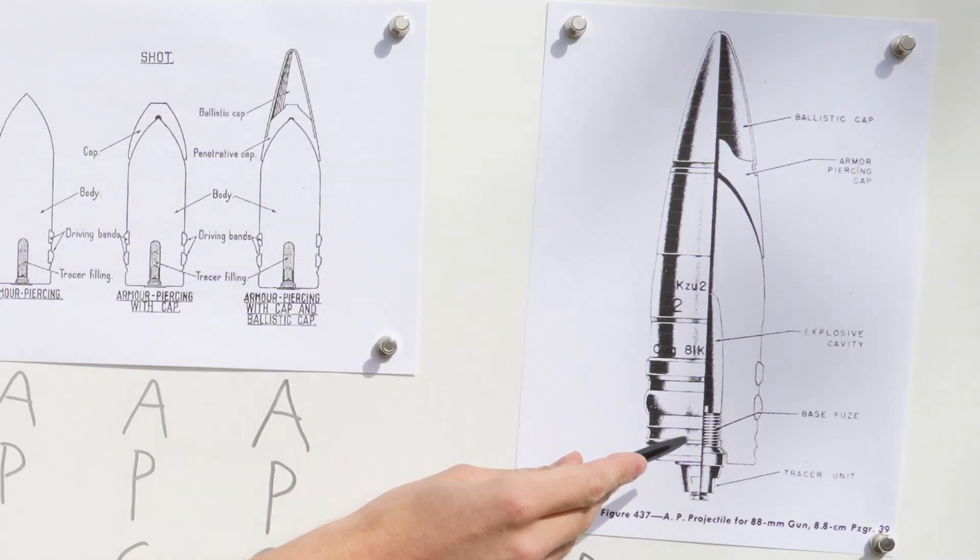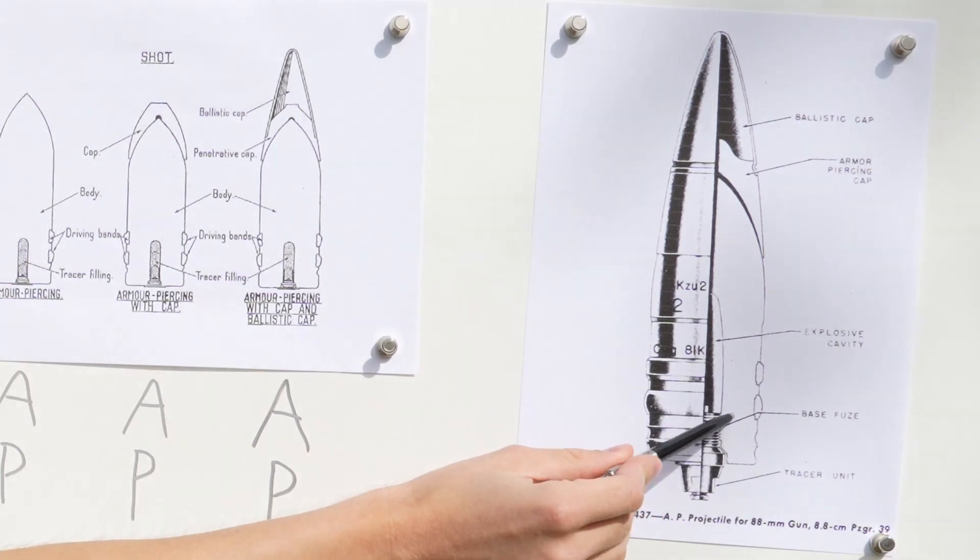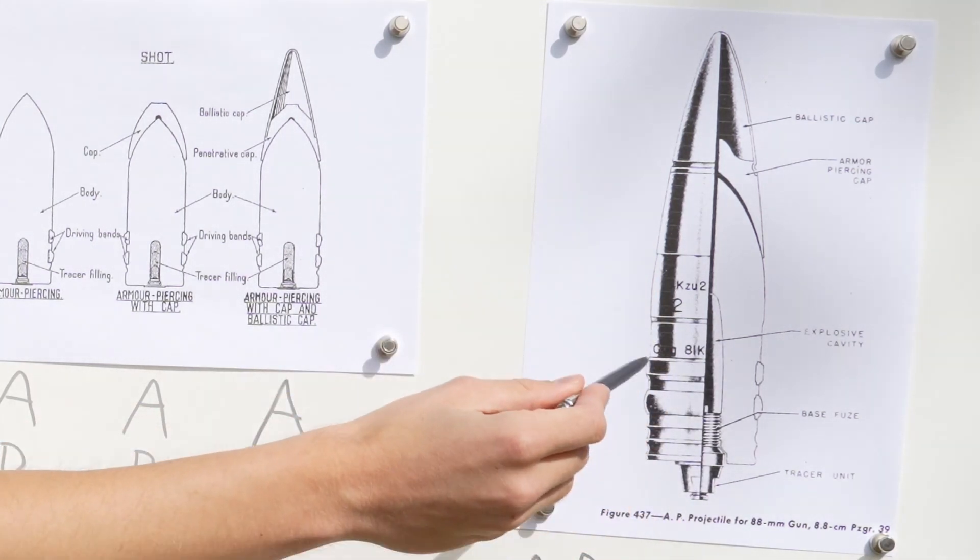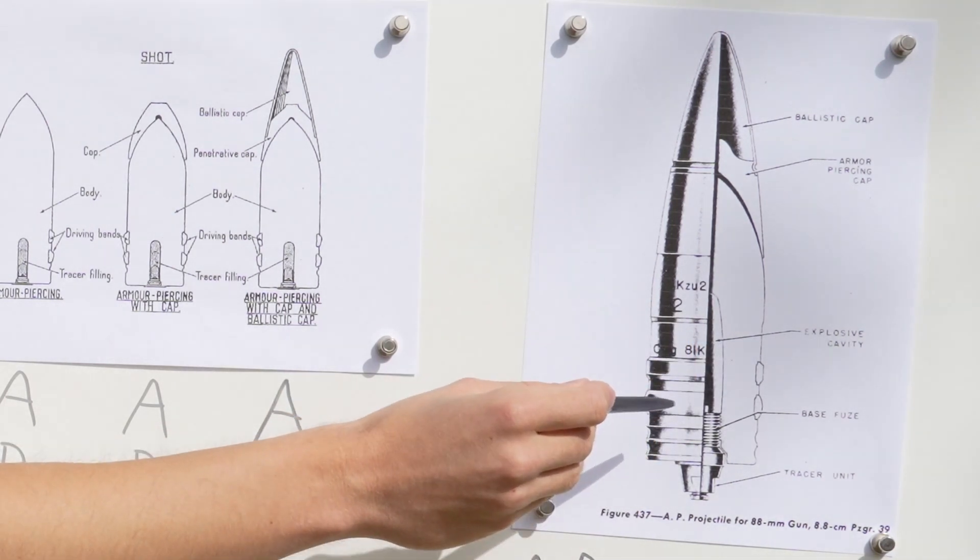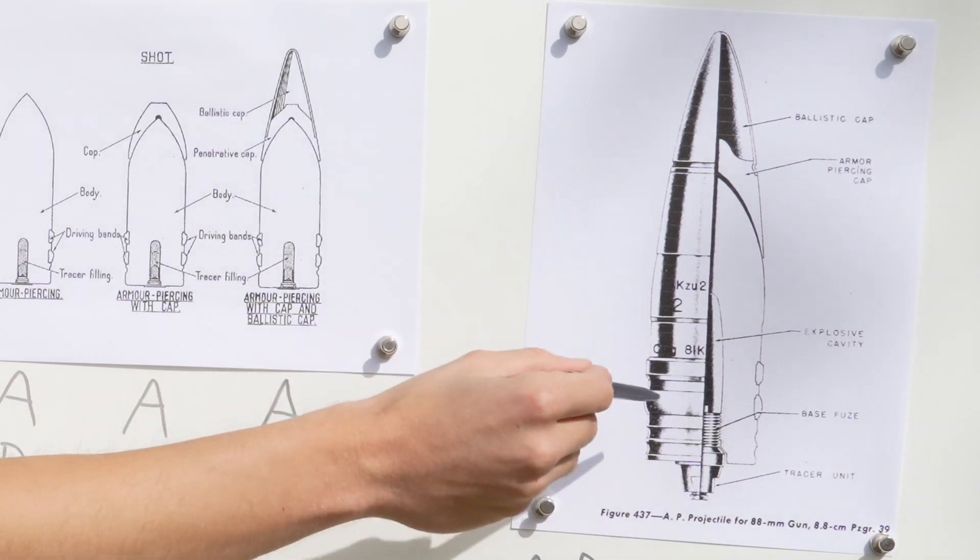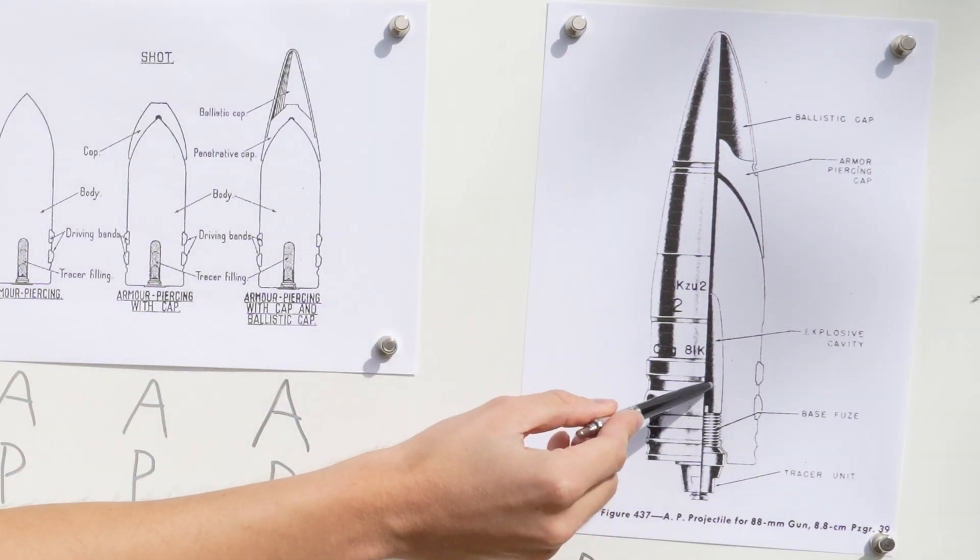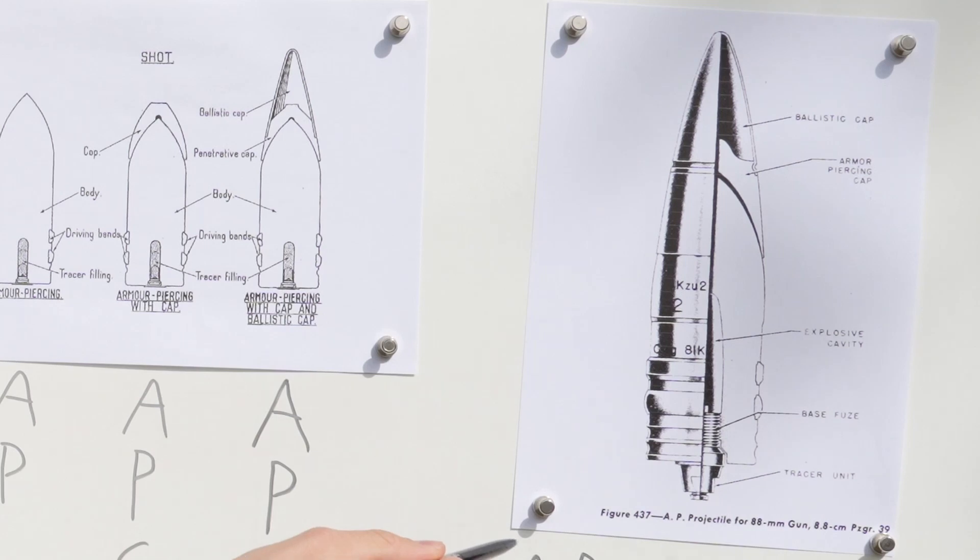Because as you can see here, like this German 88, it has a decent sized cavity for explosive filler but the walls are still very thick and they have to be because this is an armor piercing shot. This is meant to be fired at very high velocity and punch through armor while remaining largely intact, so it has to have a certain thickness.